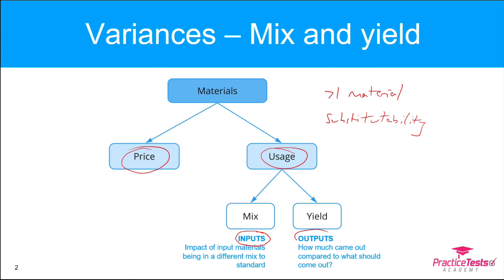We also look at yield — the outputs from the process compared to what should have come out. The mix and yield variances together are a sub-analysis of the usage variance, which means if you add mix and yield together you should get back to your traditional usage variance.